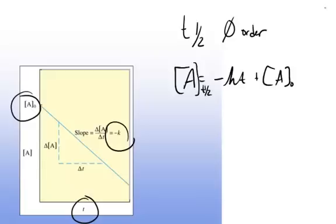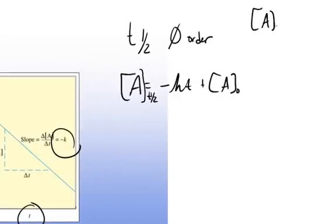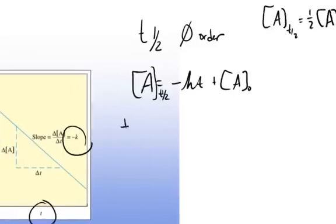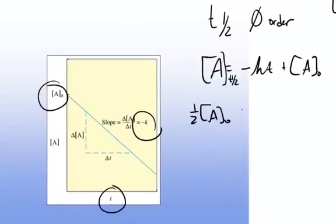And so at t₁/₂, the concentration of [A] at t₁/₂ is equal to one-half of the original concentration, so I can plug that in. And it's one-half [A]₀ equals negative kt plus [A]₀. And so if I subtract [A]₀ from both sides, then I'll get negative one-half [A]₀ is equal to negative kt₁/₂.